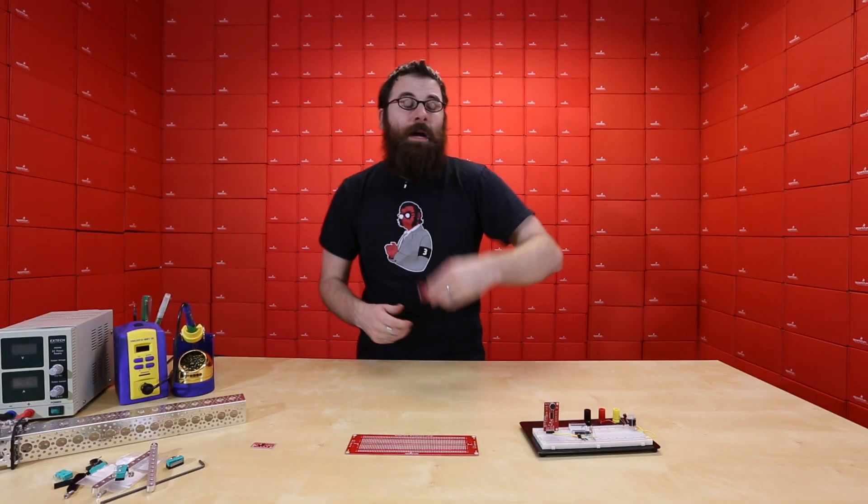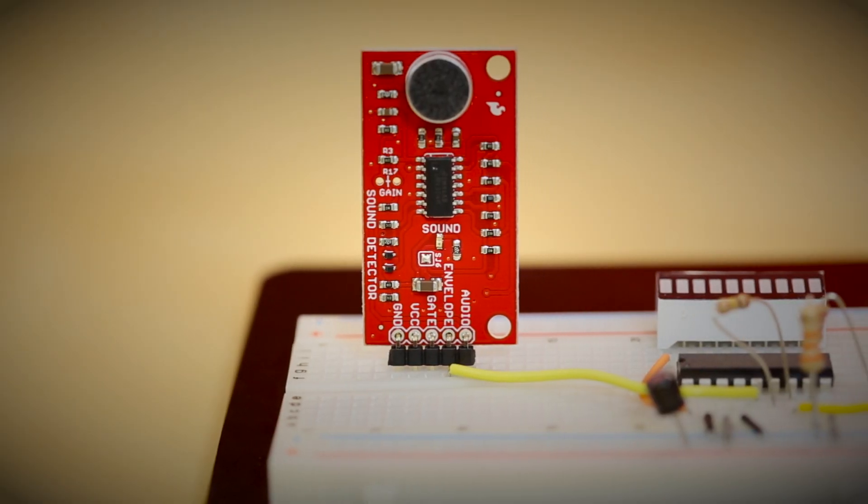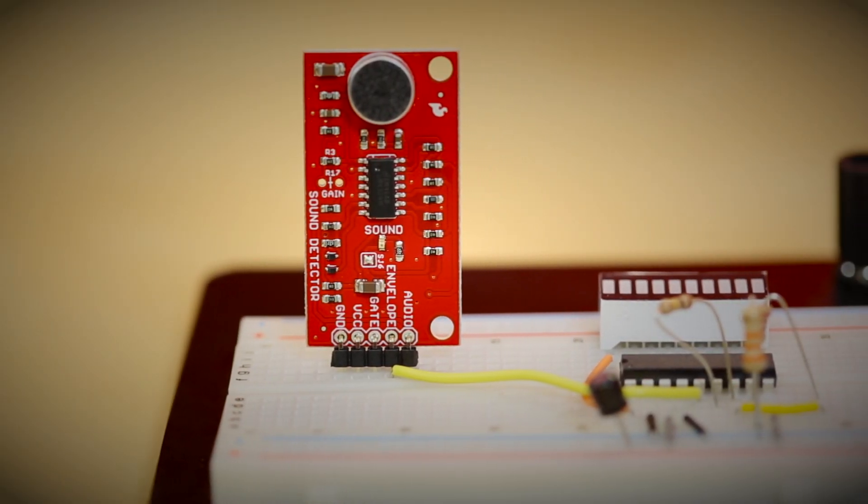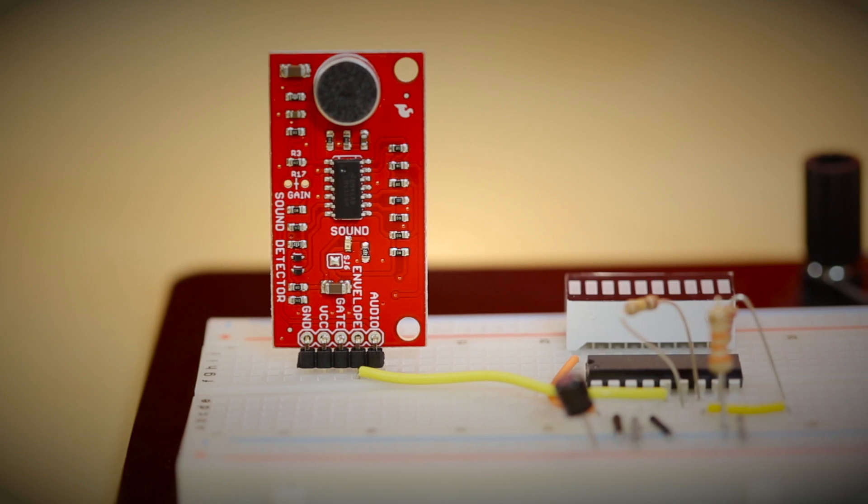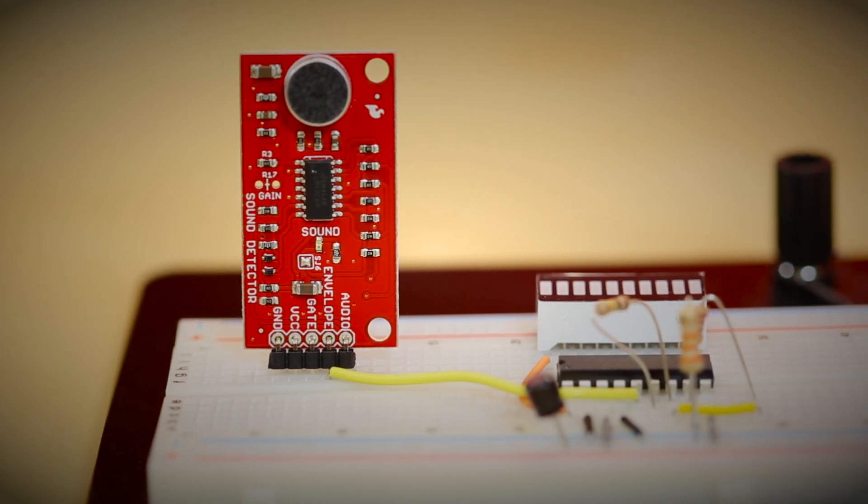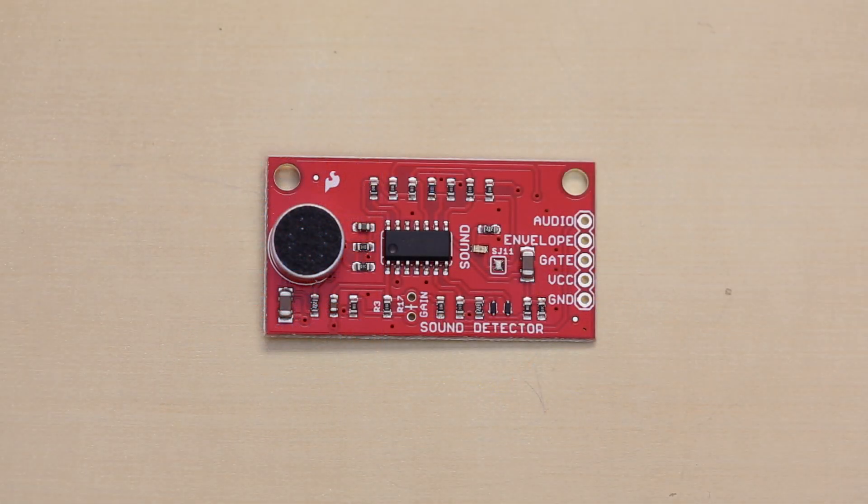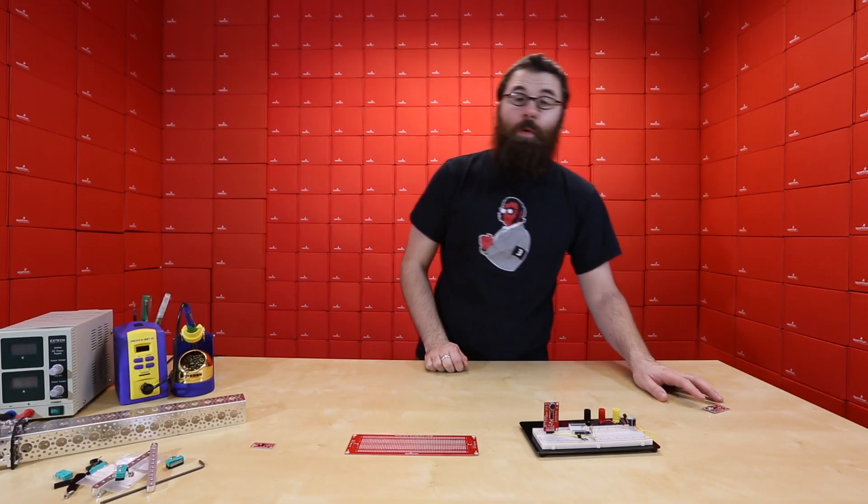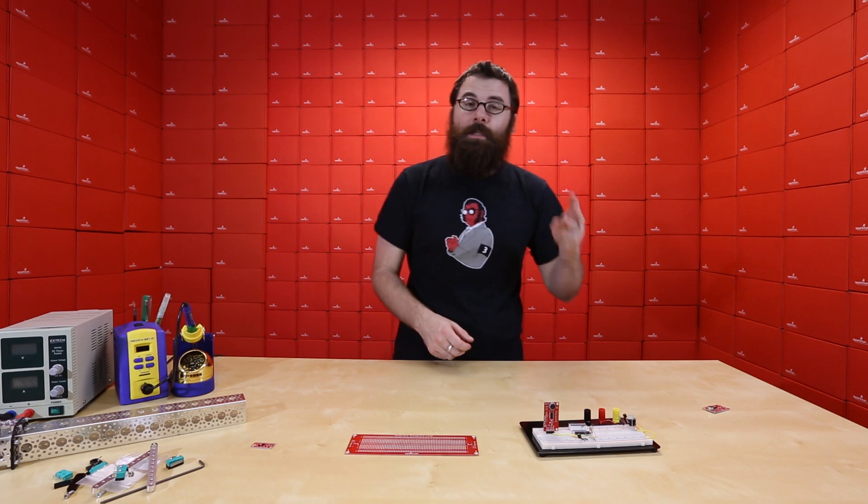Next up, we have the sound detector. The sound detector is an update to our electret microphone breakout. We took all the feedback that everyone had in the comments and we came up with this. It does have the same microphone on it, but we have a much different circuit behind it. This is a lot more flexible and has a lot more options for use. One of the main features of this board is the output. It has three separate outputs.